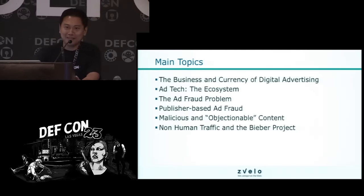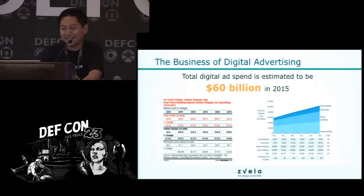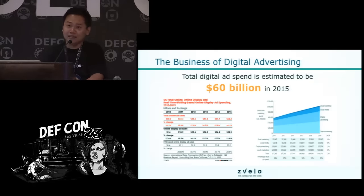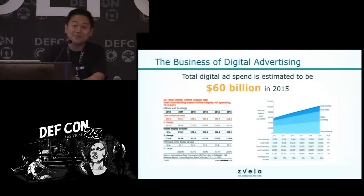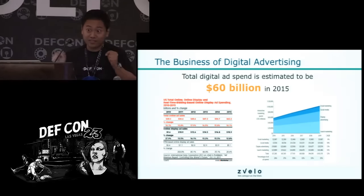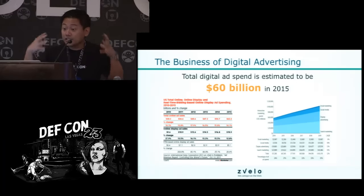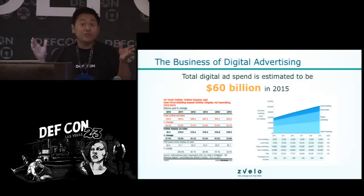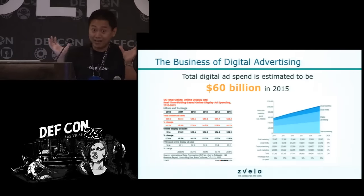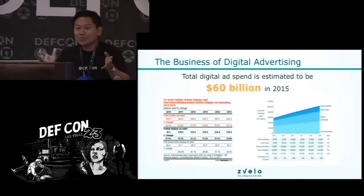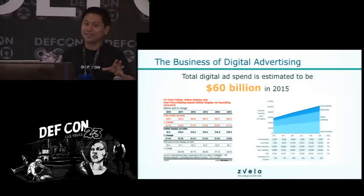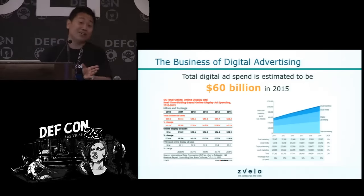Why are we even talking about this? The business of digital advertising: we're talking about this because digital advertising is big money. The total digital ad spend is estimated at about $60 billion in 2015, and it is estimated that five years from now the digital ad spend would be about $100 billion. It is a big pie, and a lot of different people would like a big chunk of it. That's why this is a very important topic right now in ad tech and even in security.